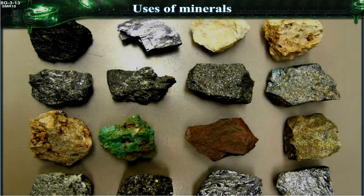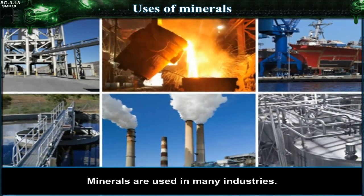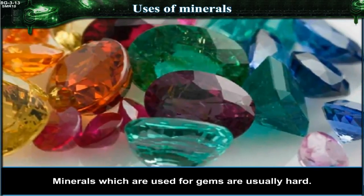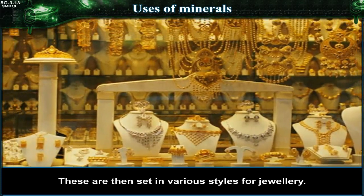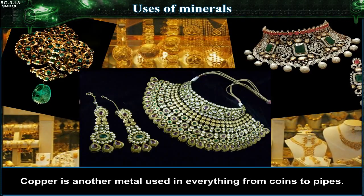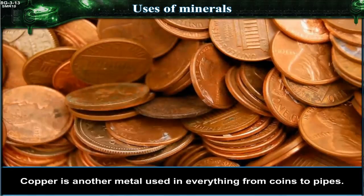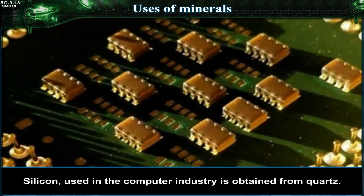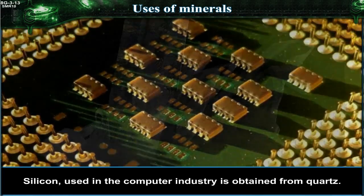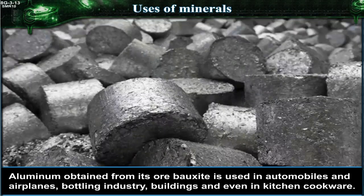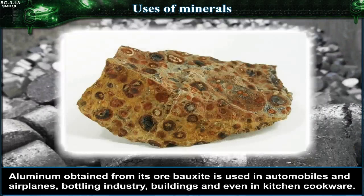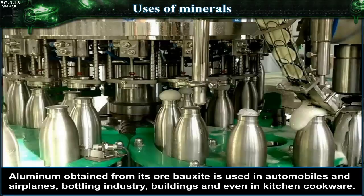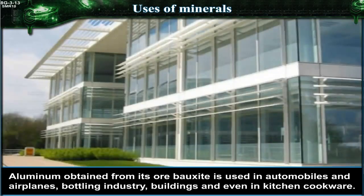Uses of Minerals. Minerals are used in many industries. Minerals which are used for gems are usually hard; these are then set in various styles of jewelry. Copper is another metal used in everything from coins to pipes. Silicon, used in the computer industry, is obtained from quartz. Aluminium, obtained from its ore bauxite, is used in automobiles, airplanes, the bottling industry, and even in kitchen cookware.